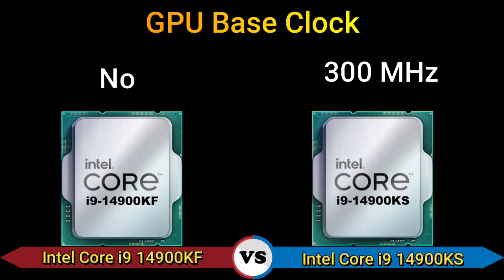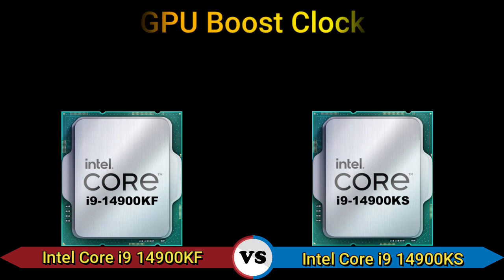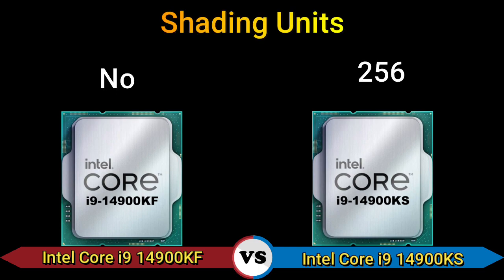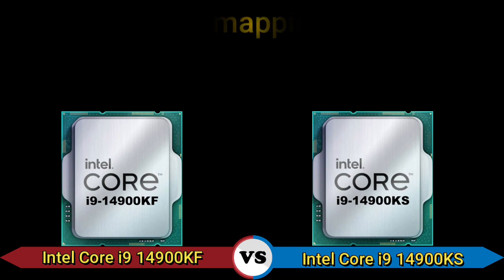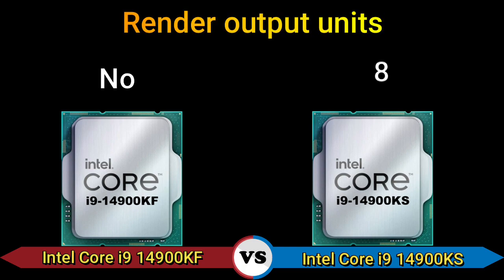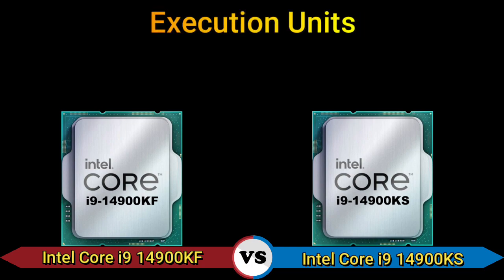GPU base clock: no and 300 MHz. GPU boost clock: no and 1650 MHz. Shading units: no and 256. Texture mapping units: no and 64. Render output units: no and 8. Execution units: no and 32.